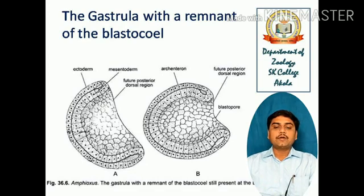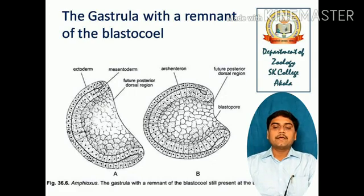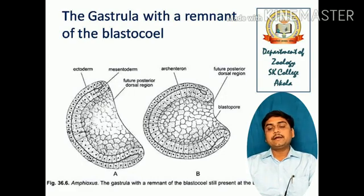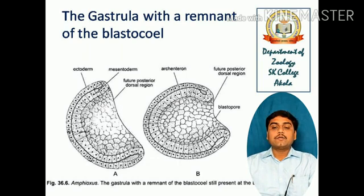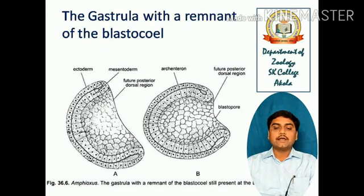In this diagram, you can see the gastrula with the remnants of the blastocoel still present at the blastopore. Diagram A shows the ectoderm and mesentoderm, with the future posterior dorsal region clearly visible. In diagram B, the cup-shaped form is visible in which the archenteron process is getting formed, the future posterior dorsal region and the opening — the blastopore — which will in future form the lip of the blastopore.